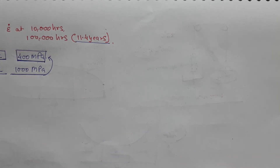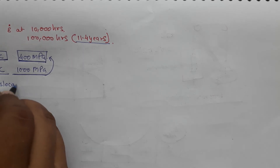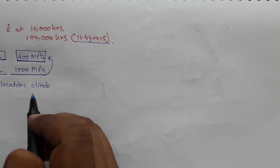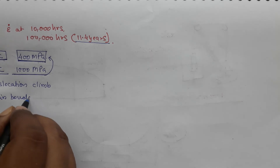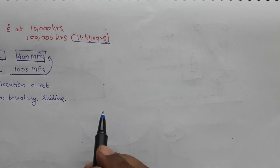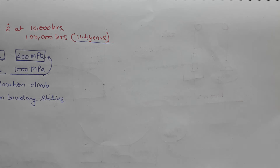If we keep 400 MPa constant and increase the temperature to 800 degrees Celsius, oxidation is not a problem if we do the test in vacuum, but the mechanism of transformation will change. At lower temperature, only dislocation climb was happening as the mechanism for creep, but at 800 degrees Celsius you can have grain boundary sliding. If the mechanism of deformation changes, you will not get the same strain rate.